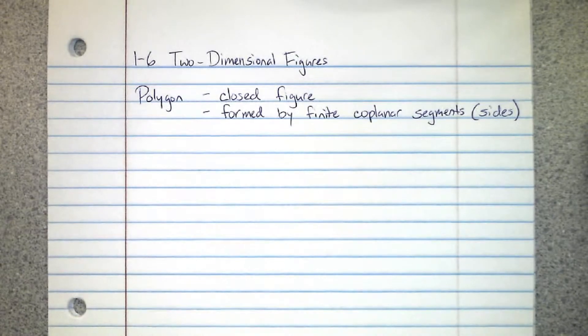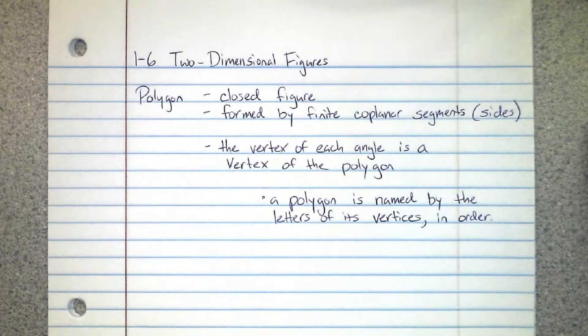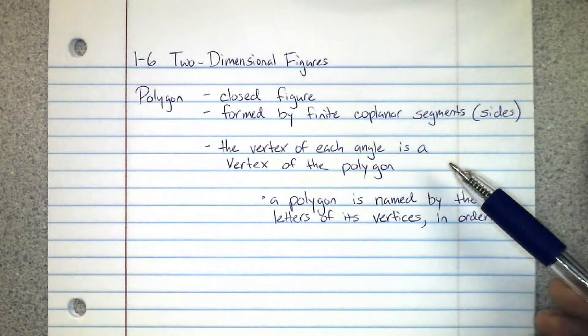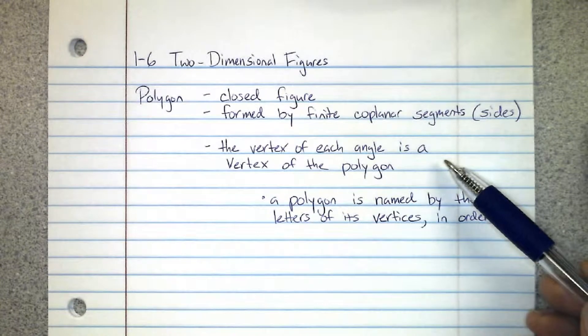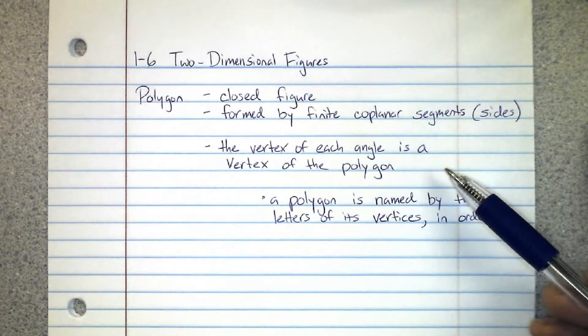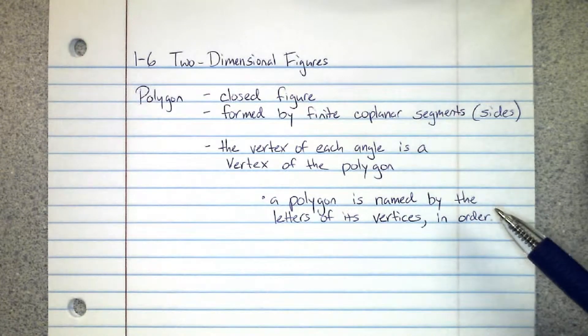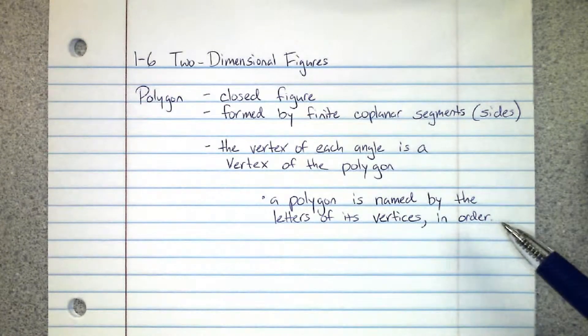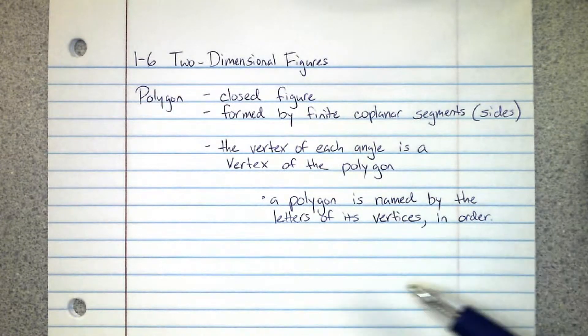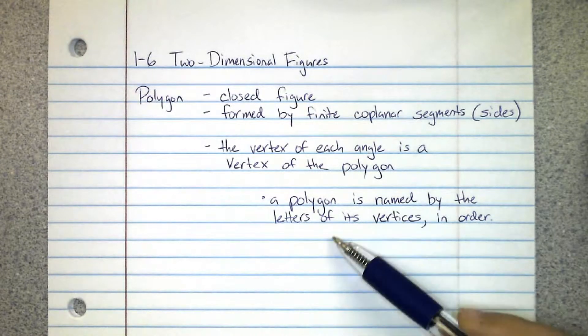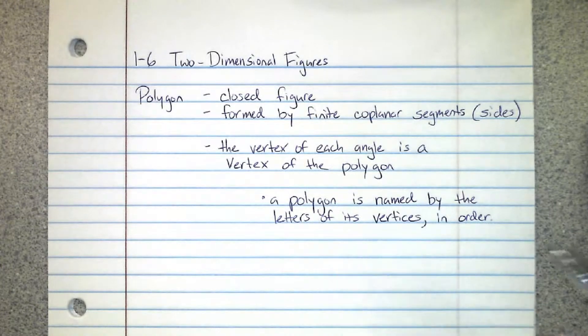The segments are basically the sides. Two things to know: the vertex of each angle is a vertex of the polygon, and a polygon is named by the letters of its vertices in order.